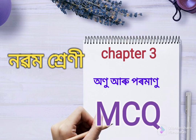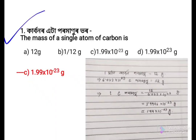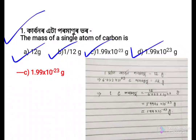This video will begin Chapter 3 MCQ discussion. First question: The mass of a single atom of carbon is — Option a: 12 gram, Option b: 1/12 gram, Option c: 1.99 into 10 to the power minus 23 gram, Option d: 1.99 into 10 to the power minus 23 gram. Answer is Option c: 1.99 into 10 to the power minus 23 gram.